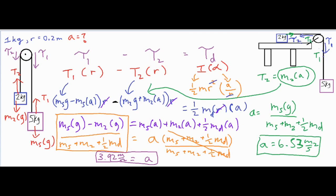In both of these cases, or any similar problem, you look at the pulley, see how the ropes are tugging on it, and determine which way each torque is acting. Then you add or subtract those torques — in both cases here we subtract — and make the substitutions for rotational inertia and Newton's second law to get masses and linear accelerations into the expression, allowing you to solve for 'a'. I hope that was helpful — thank you for watching.